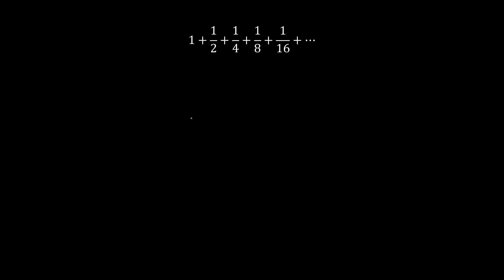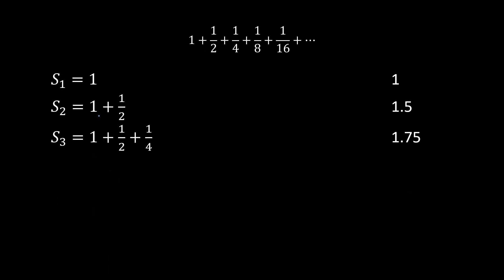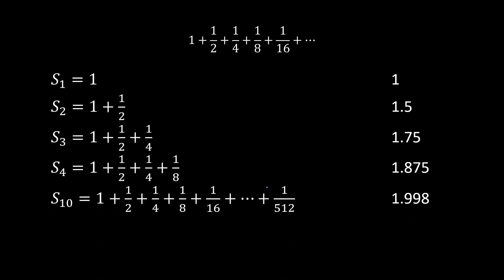For example, let's say we had 1 plus 1 half plus 1 fourth plus 1 eighth, and you keep going forever and ever. If you want to add the sum of just the first term, s sub 1, we just have the first term, which would be 1. If we have s sub 2, we're adding the first two terms — 1 plus 1 half — which gives 1.5. S sub 3 equals 1 plus 1 half plus 1 fourth. Adding the first four terms gives 1.875.